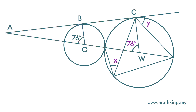Now this angle of 76 degrees is subtended by this arc. And this arc also subtends another angle at the circumference here, which is X. Since the angle at center is 2 times the angle at circumference, X is 76 divided by 2, which is 38 degrees.